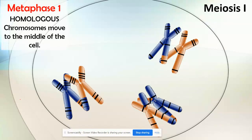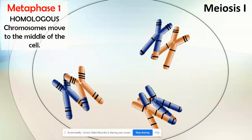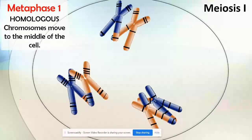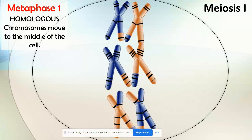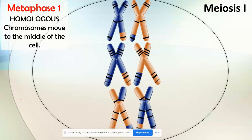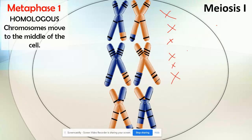Now we're moving into metaphase I. This is where these homologous pairs are going to move to the middle of the cell. This does not happen in mitosis. In mitosis, we would have had six individual chromosomes lined up along the middle — one through six — instead of pairs.